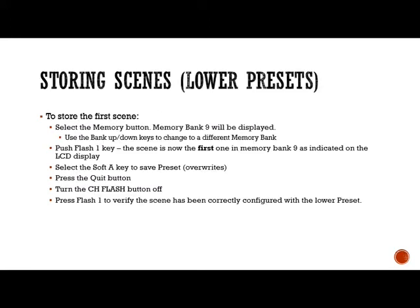We've created a scene. To store the first scene, we select the memory bank button and memory bank nine will be displayed. Use the bank up/down to change to a different memory bank if required. We push the flash one key at the bottom of our controller, and that will select the first location in memory.